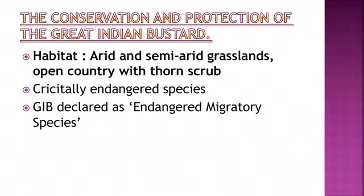Let us look into the conservation and protection of the Great Indian Bustard (GIB). GIB is endemic to the Indian subcontinent, found in Central India, Western India, and Eastern Pakistan. Its habitat is arid and semi-arid grasslands, open country with thorn scrub, and tall grass interspersed with cultivation. It avoids irrigated areas and is not found in thick forest or rainforest — it is specifically a species of grassland and dry regions.